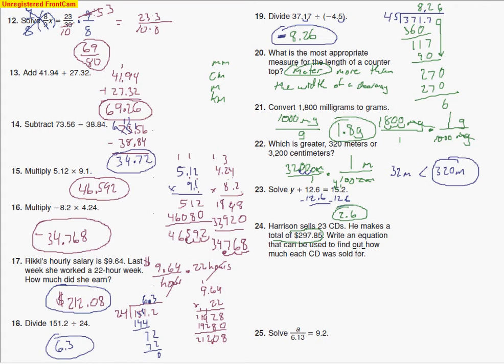This is my variable. So I'm going to say that this equals, and then I'm going to come up with some sort of variable, the cost. How about the cost of a CD? How much each CD was sold for.